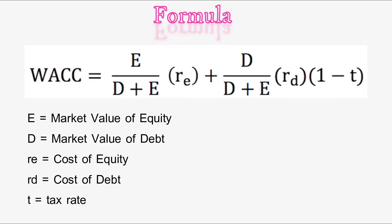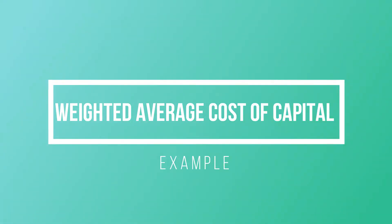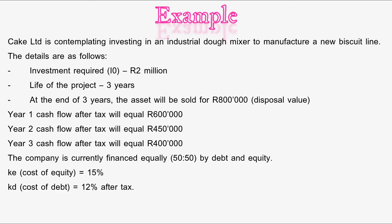The WACC formula: E represents the market value of equity, D represents the market value of debt, Re is the cost of equity, Rd is the cost of debt, and T is the tax rate. Okay, let's begin with our example.